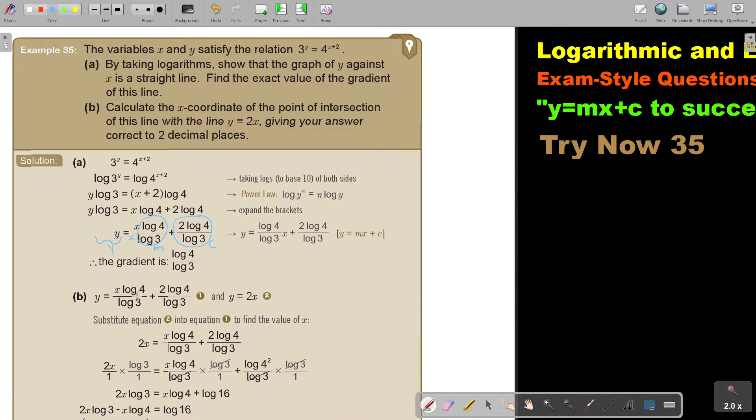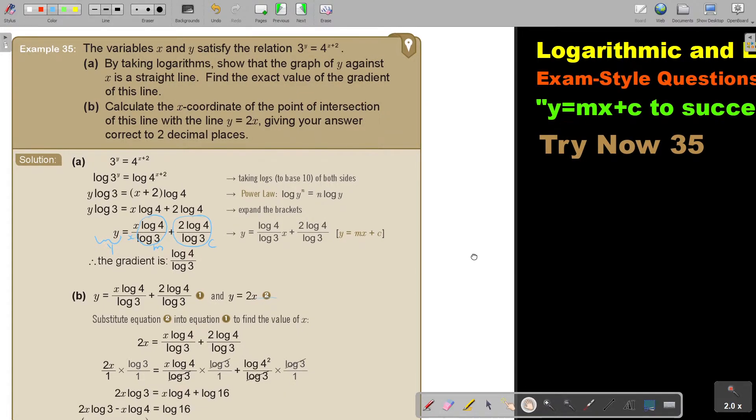And then we look at number b, calculate the x coordinate of the point of intersection of the line, meaning this line, with the line y equals 2x. So we have two equations. We have this one and this one, and we are going to solve them simultaneously.